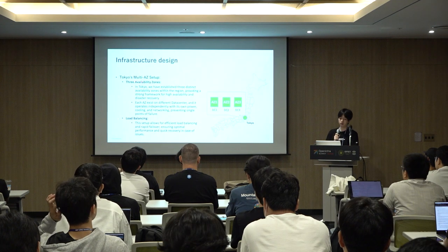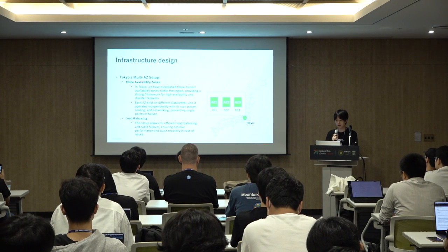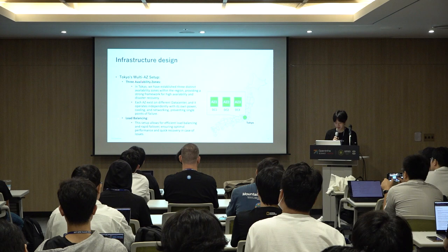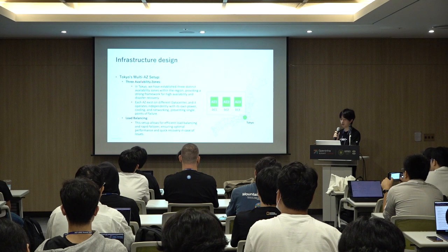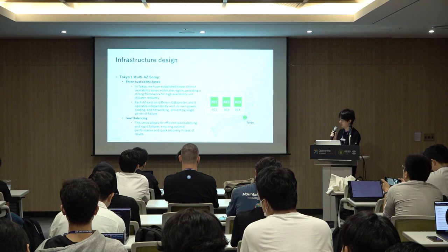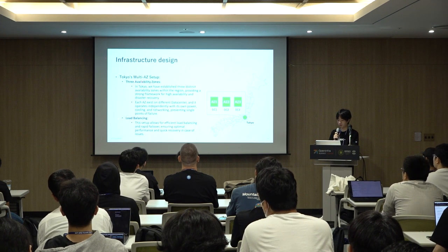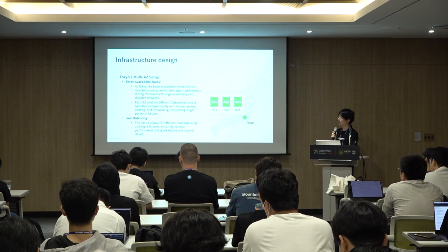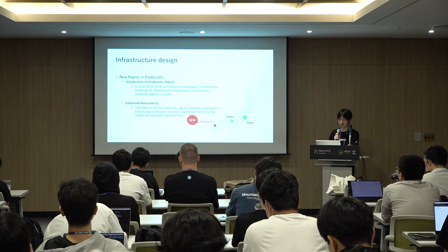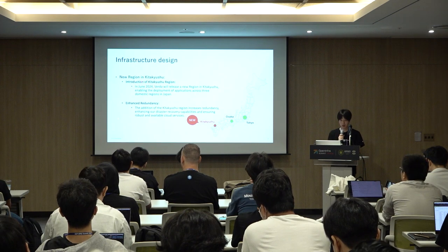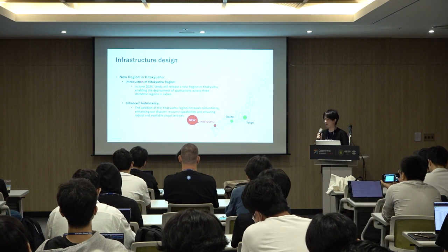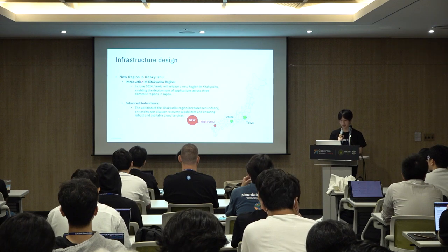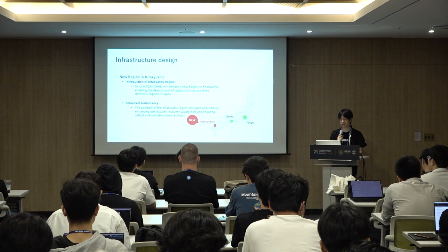In Tokyo we have three availability zones; each availability zone exists in a different data center and operates independently with its own power and networking, preventing single points of failure. This setup also allows for efficient load balancing and optimal performance. Additionally, in June this year we released a new region in Kitakyushu, in the south of Japan, further enhancing redundancy and disaster recovery capabilities.